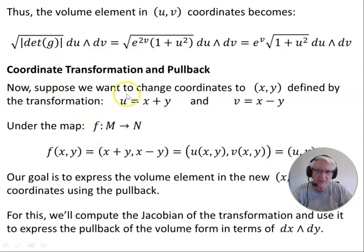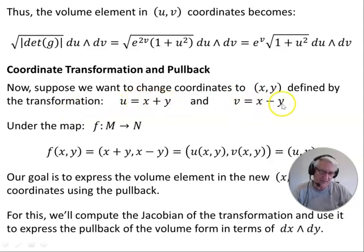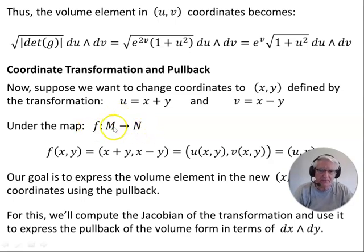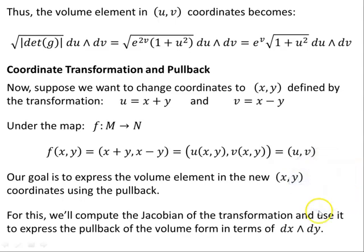Now the coordinate transformation and pullback. Suppose we want to change coordinates to XY — we want to come back from the N manifold to the M manifold. The transformation is defined by u equals x plus y and v equals x minus y, relating the Cartesian coordinates to the UV coordinates. This is under the map F which maps points from M to N, and we're going to pull back against that map. So u of x, y is x plus y and v of x, y is x minus y — those are the UV coordinates. Our goal is to express the volume element in the new XY coordinates using the pullback, computing the Jacobian of the transformation to express the pullback of the volume form in terms of dx wedge dy.